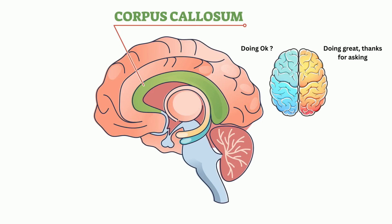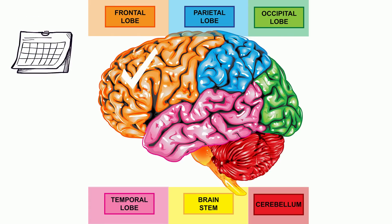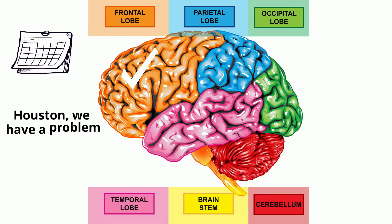The cerebrum is also divided into four lobes, each with its own specific function. The frontal lobe is located at the front of the cerebrum and is responsible for higher level functions such as planning, decision making, and problem solving.